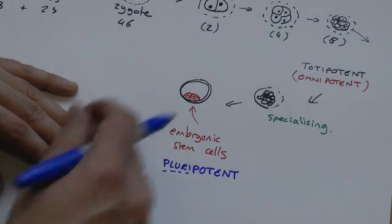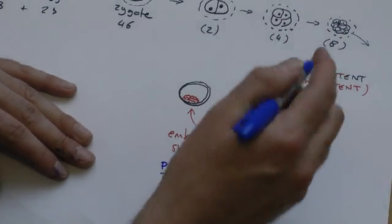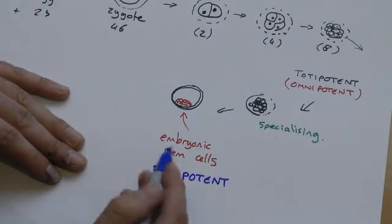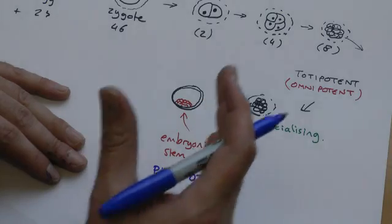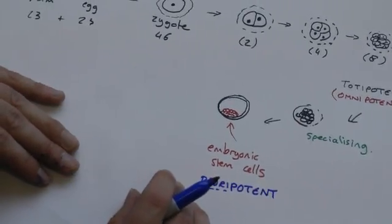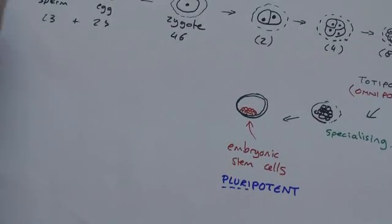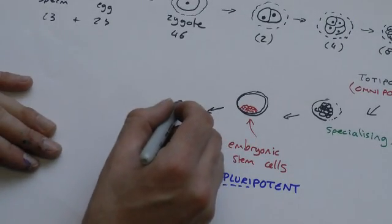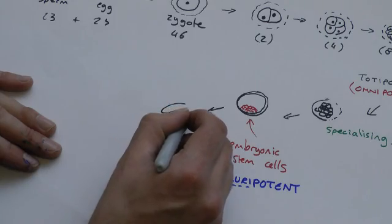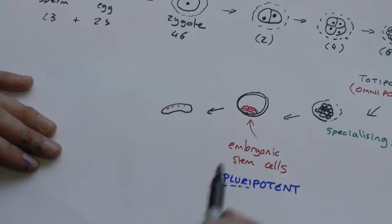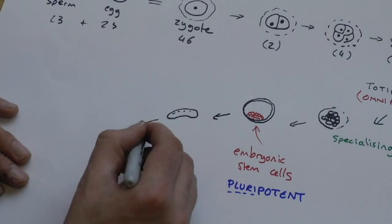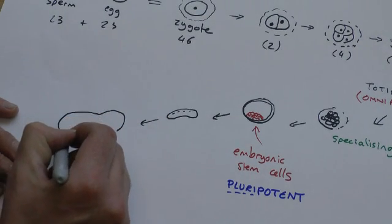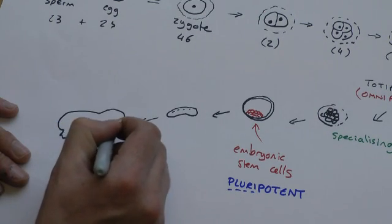Pluri as in plural, several things. Totipotent, pluripotent. Totipotent can turn into an entire organism. Pluripotent can turn into any of the different cells, tissues and organs. Now, our ball of cells will continue dividing. And it will start to turn into more recognizable shapes. Perhaps after three weeks, we'll start to see the spinal cord appearing. And eventually, we'll get our baby starting to appear. There's our baby.